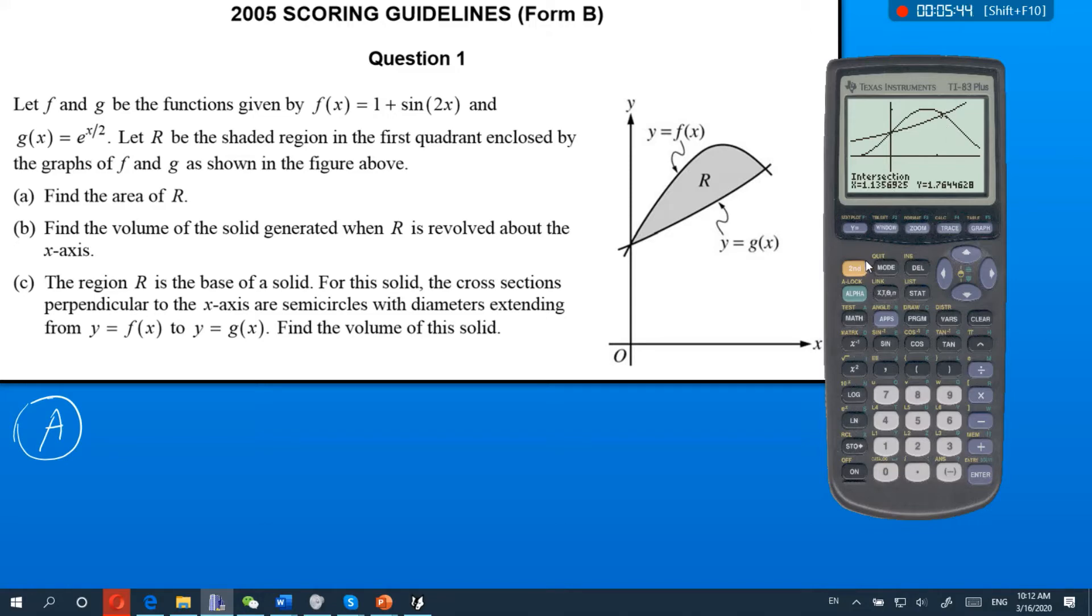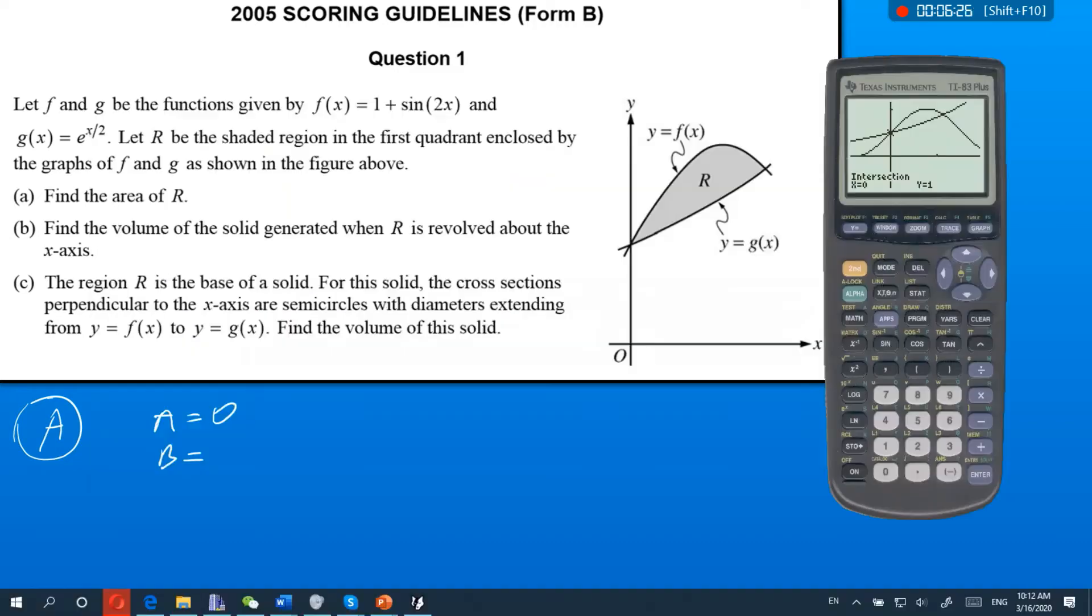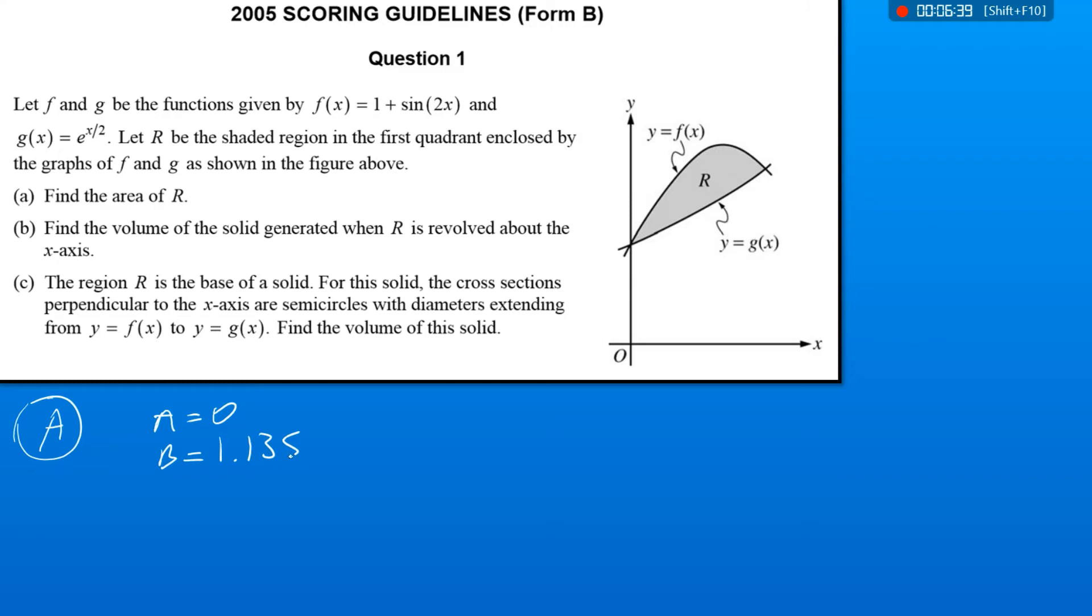Okay, which I'm going to store in the calculator. So second quit, and we'll do x store as alpha b because of the second intersect. So our second intersect was 1.135-ish, 1.136. And then our first intersect, I'm going to go back. Looks like it's zero, but I'm just going to confirm. Second, calculate, and intersect. So this is first curve, second curve, and I'm going to guess zero and see what happens. Okay, that intersection is zero. Okay, so I've got two intersects. One at a equals zero, and one at b equals 1.13569.